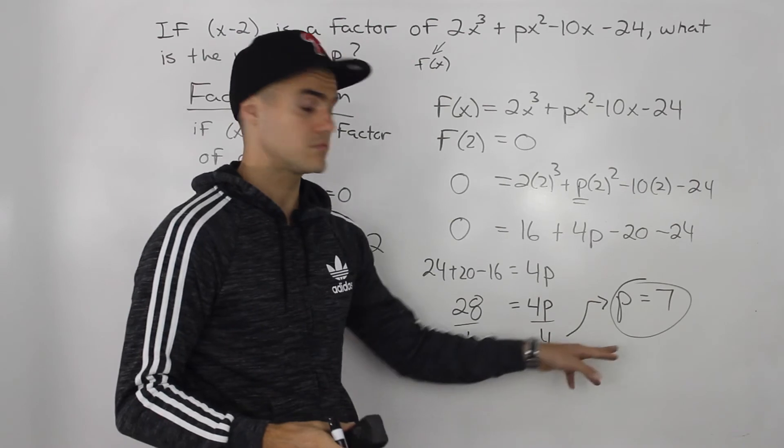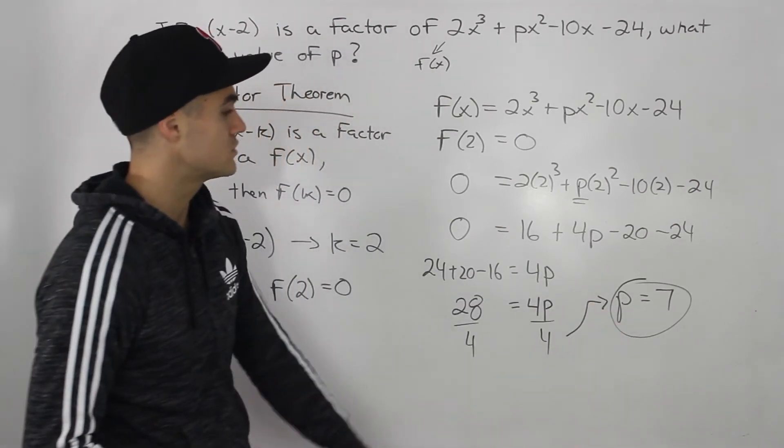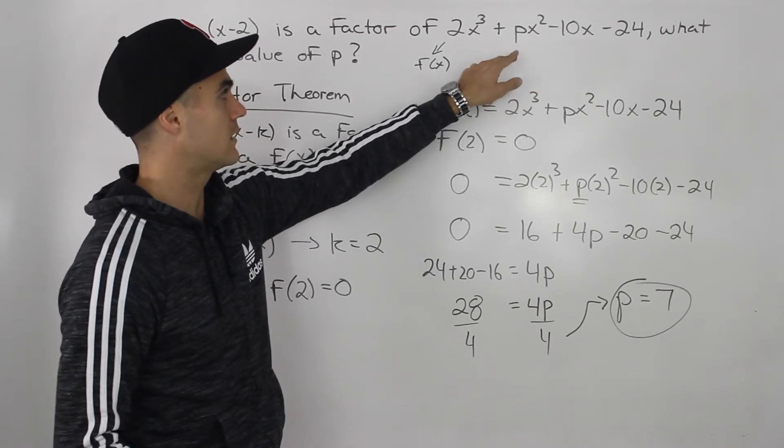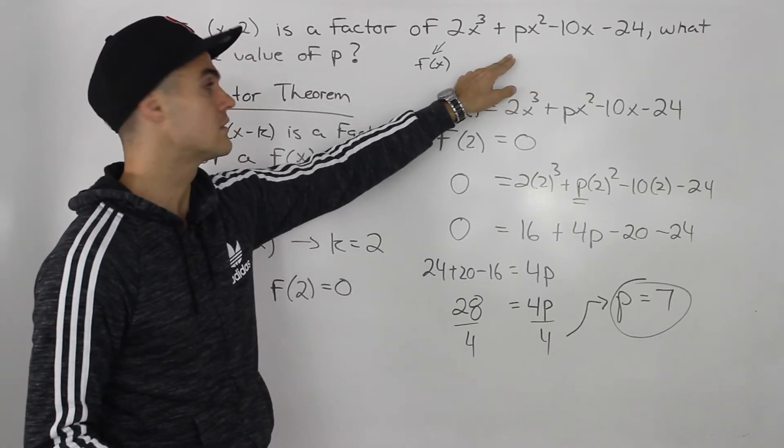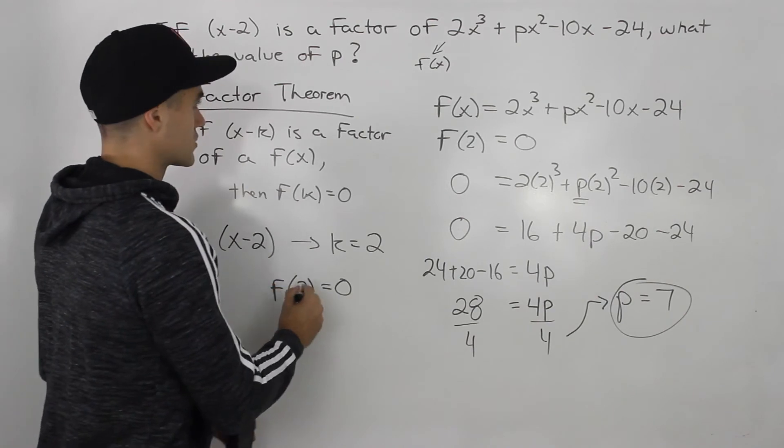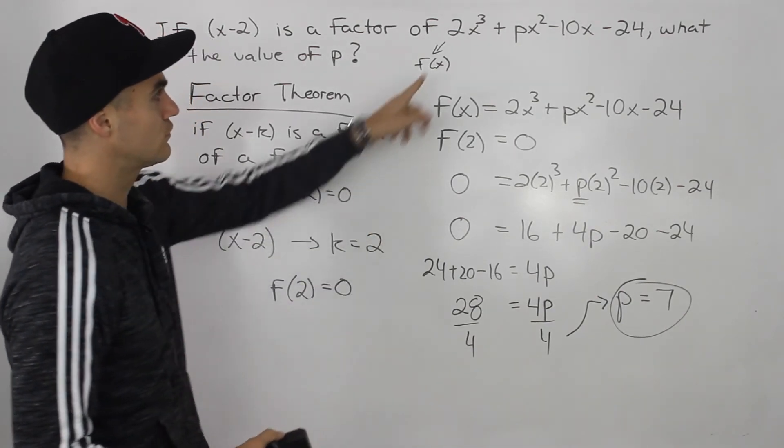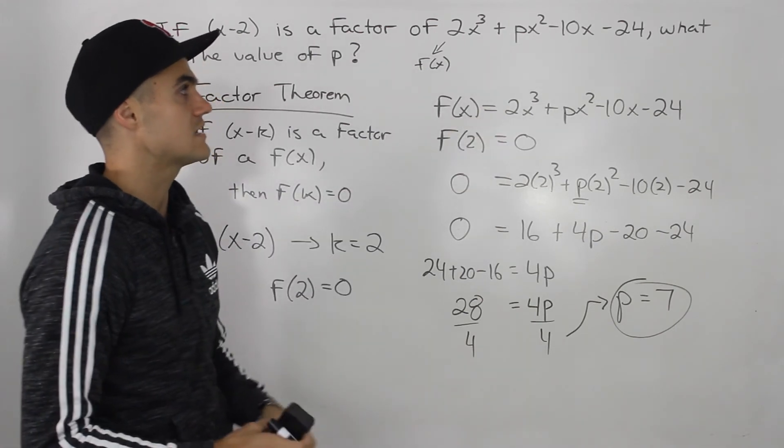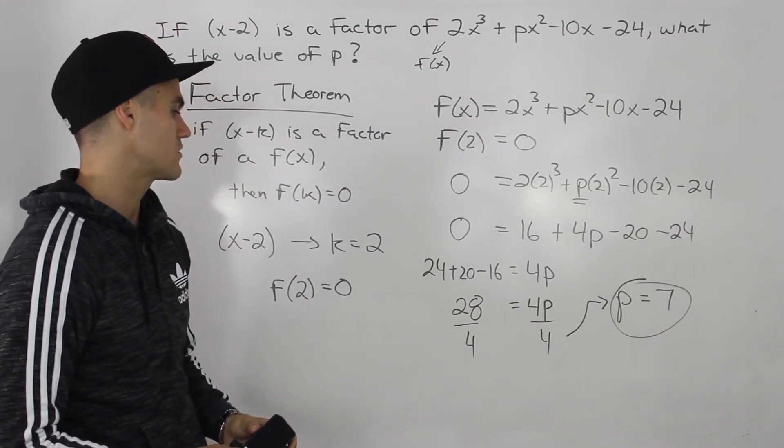And then if you have time, you can check this final answer. What you can do is you can take that 7, plug it into that original polynomial that you're given, and then you can check if this works. So then you can plug in 2 for all the x values with that 7 there for p, and then see if you get 0 for the y value.